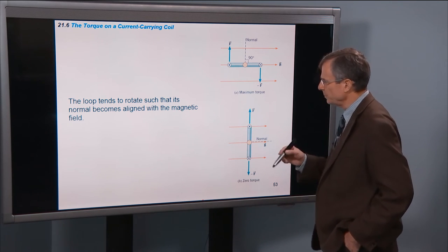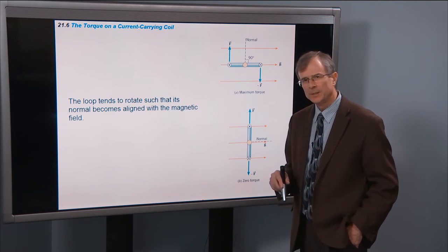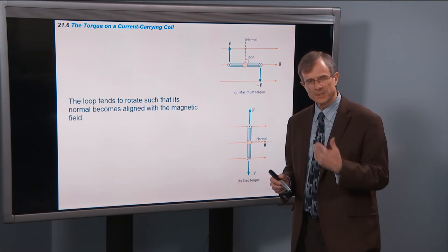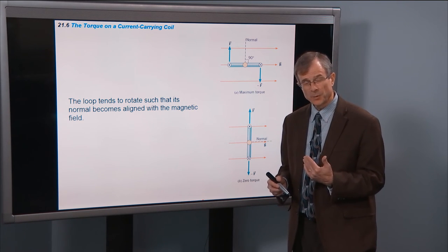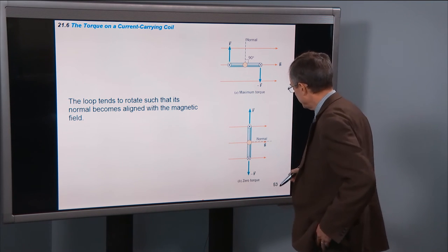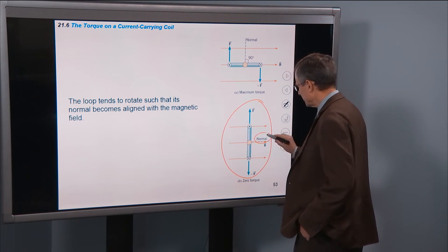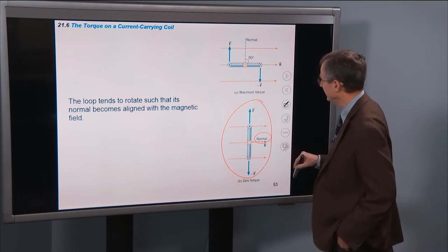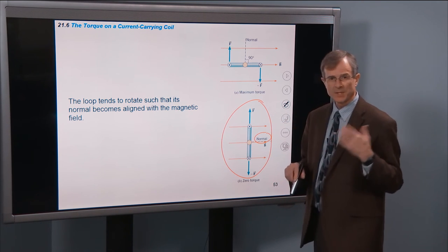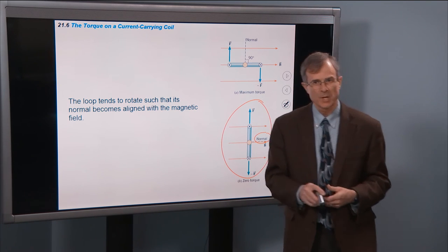The loop tends to rotate such that its normal becomes aligned with the magnetic field. We talked about the fact that there was no force when the normal direction is aligned with the magnetic field. But there is a force if it's on either side and the objective is, so it likes to be in this situation here, where the normal direction coincides with the magnetic field. When it's not, it tries to line it up. It's like in the demo where we saw that the north and the south poles of the two magnets attract each other.